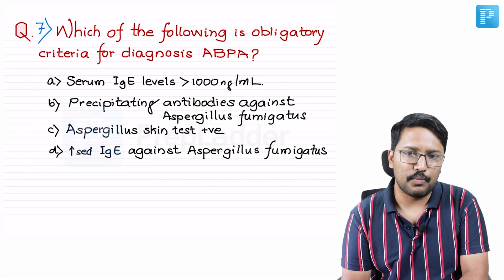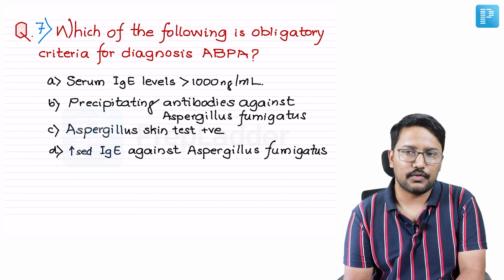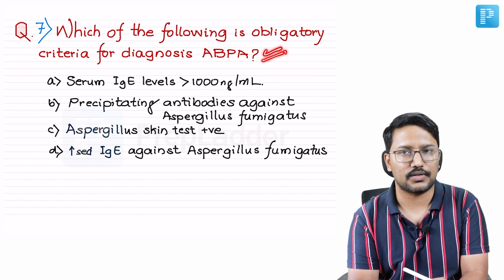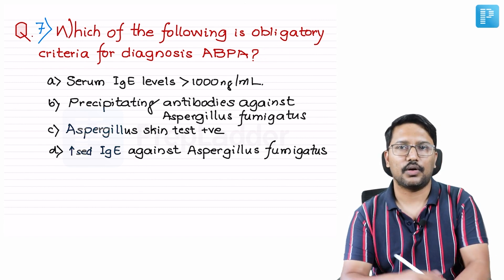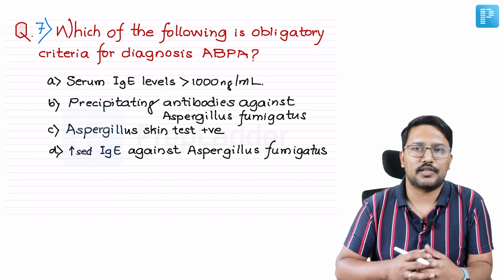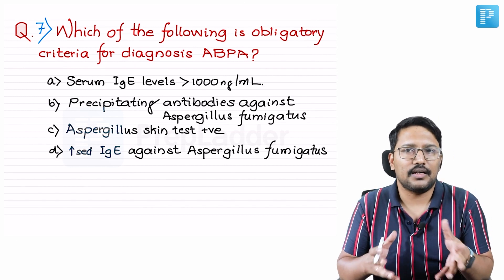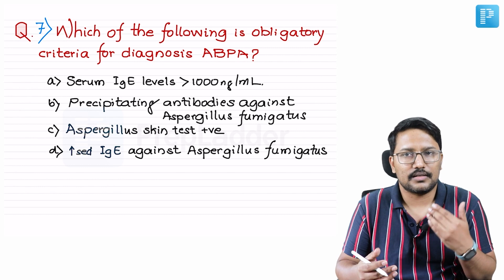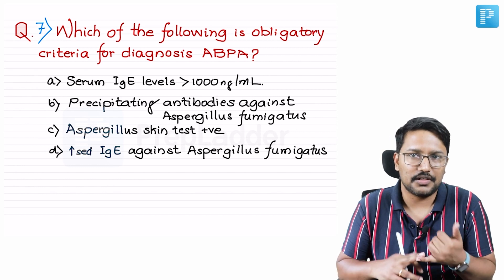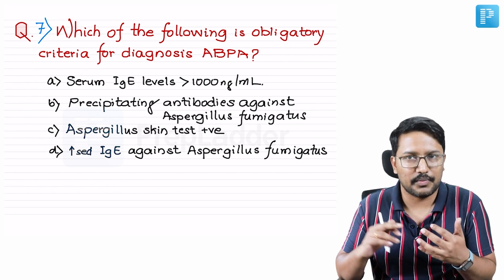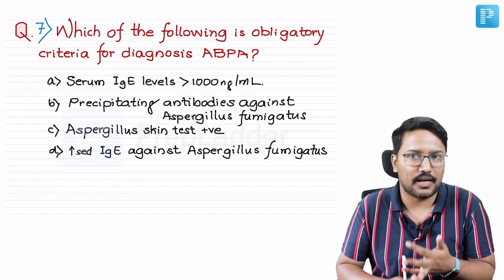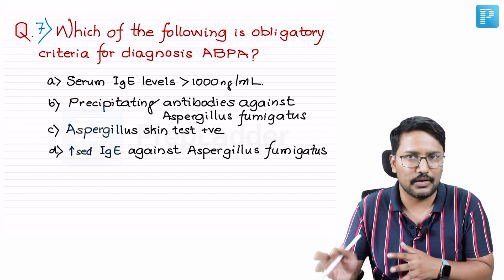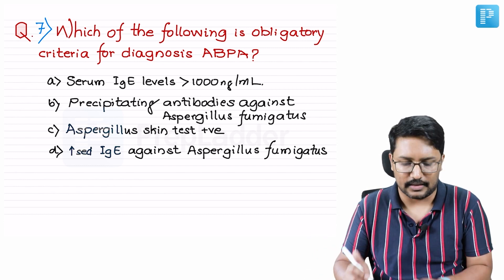Which of the following is an obligatory criteria for diagnosis of allergic bronchopulmonary aspergillosis? Allergic bronchopulmonary aspergillosis currently follows what is known as ISHAM criteria. In that, there is a predisposing condition that should be present, the patient should have an obligatory criteria plus the other supportive criteria.